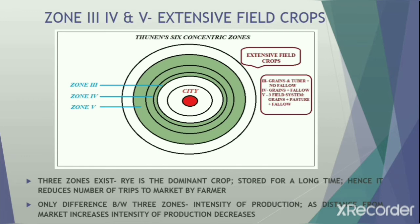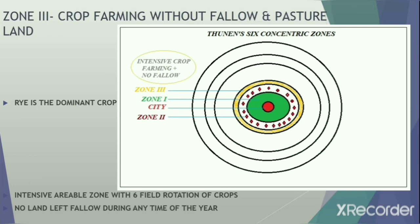Beyond the forest belt, three zones exist where rye is the important market product. The crops grown here are grains that can be stored for a long time, reducing the number of trips to the market. The only difference between these three zones is that the intensity of production varies — as distance from the market increases, intensity of production decreases. Zone 3 is the crop farming zone without any fallow land or pasture land. This zone has intensive arable farming with a six-field rotation of crops, where rye is the dominant crop and no land is left fallow at any time.